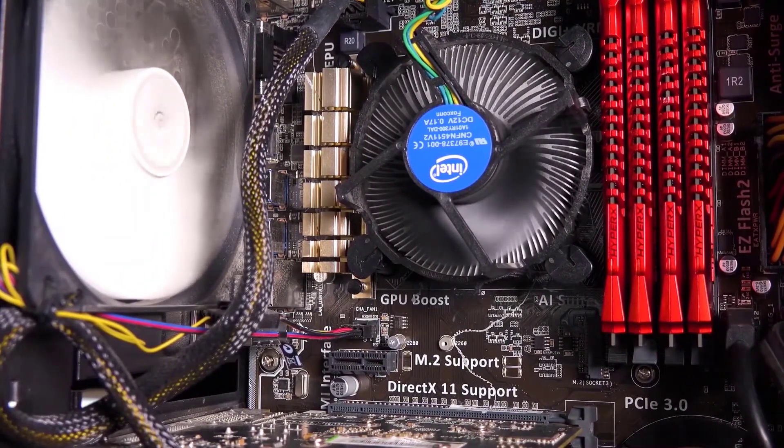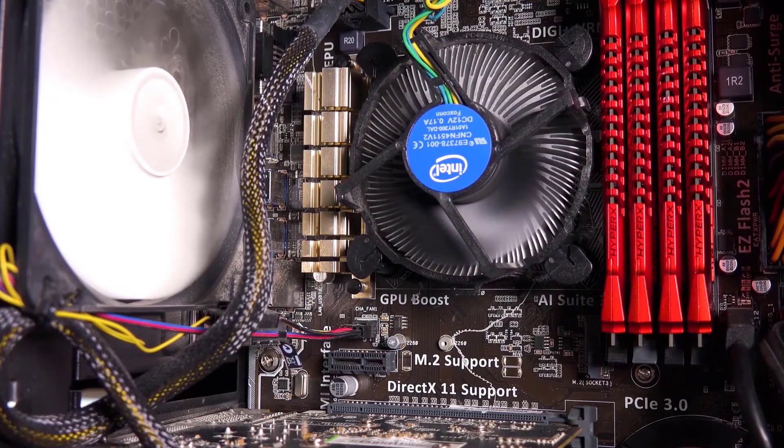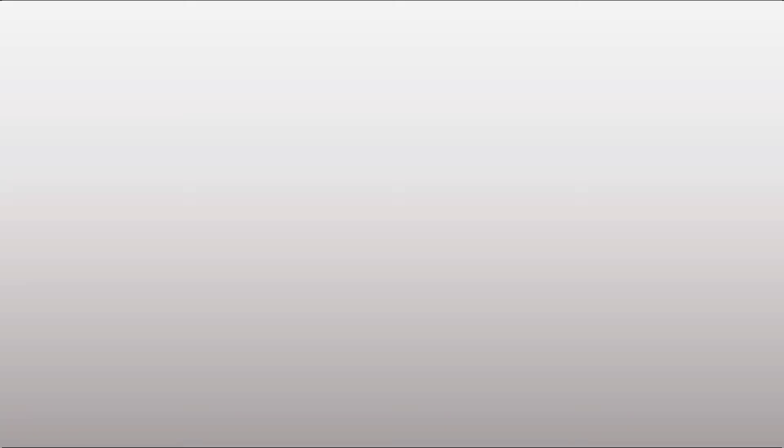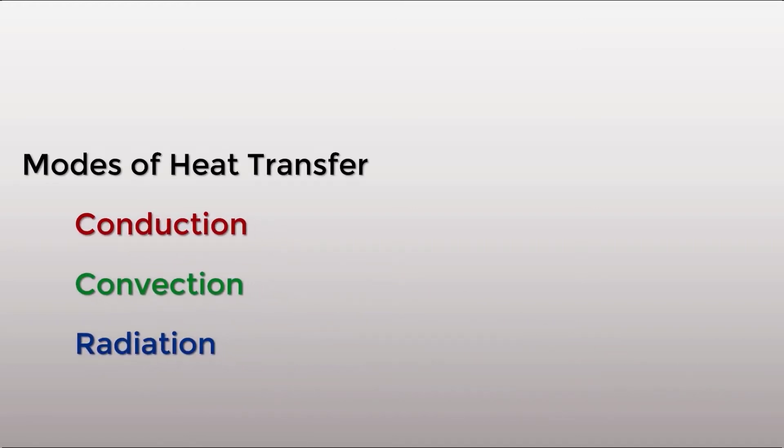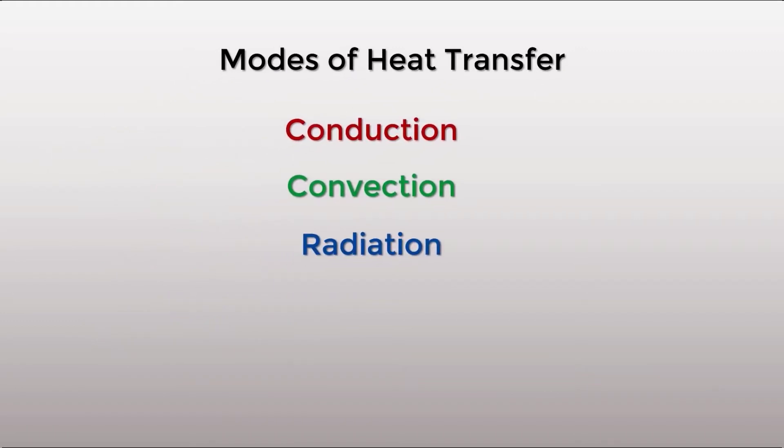Now this transfer of thermal energy can occur in three ways. It can happen via conduction, convection or radiation. These are the three modes of heat transfer. So let's look into them in detail.